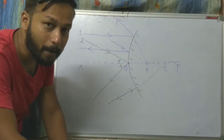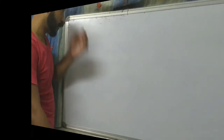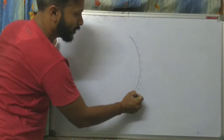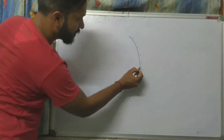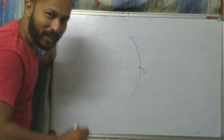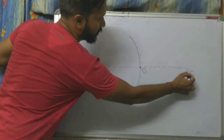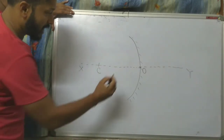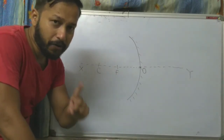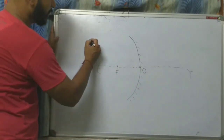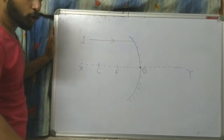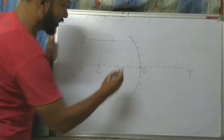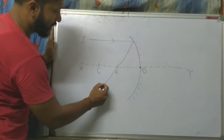Now we will send the same rays for a concave mirror. Let us draw a concave mirror. This is my concave mirror. This is the optical center, and X-Y is the principal axis. This is called the center of curvature, and this is called the focus point. Like the previous mirror, the first ray is sent parallel to the principal axis. After reflecting by this mirror, that ray will pass through the focus point — see, it is passing through the focus point.